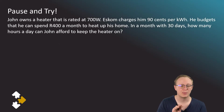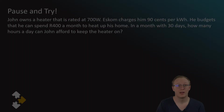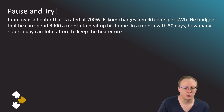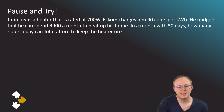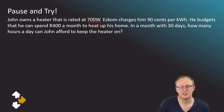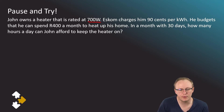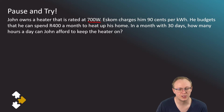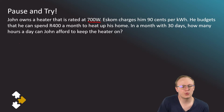Please pause the video and see if you can calculate the answer. John owns a heater rated at 700 watts. Eskom charges him 90 cents per kilowatt hour. He budgets that he can spend 400 rand a month to heat his home. In a month with 30 days, how many hours a day can John afford to keep the heater on?